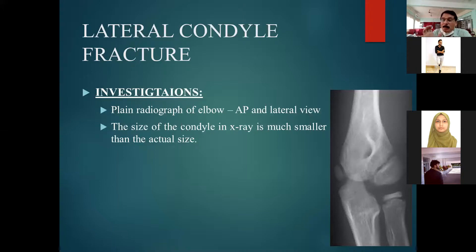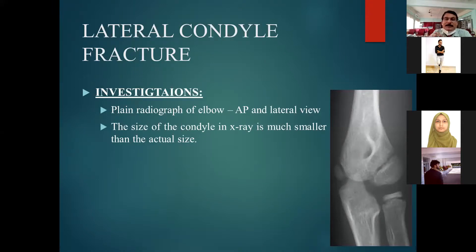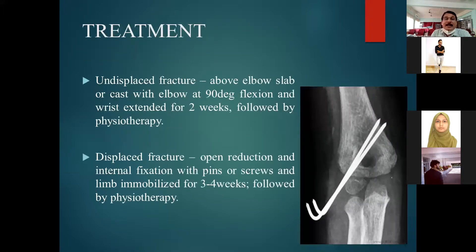Since the maximum part of the elbow is cartilaginous in nature, radiologically you will find only a small fragment on X-ray — but actually the fragment is very large because most of its composition is cartilage. The X-ray can therefore be very misleading: the fragment appears small on imaging, but when you open up the fracture you will find a very large fragment, as most of its part was constituted by cartilage rather than bone.